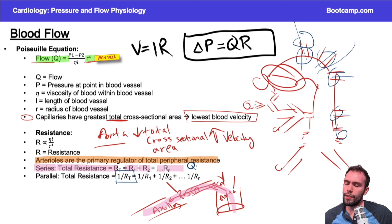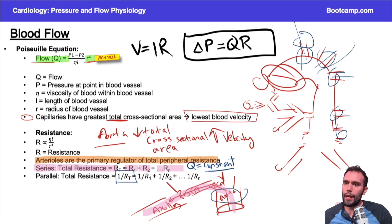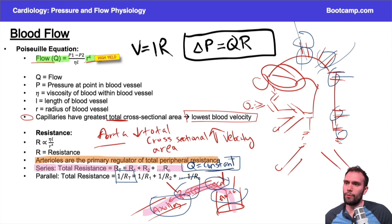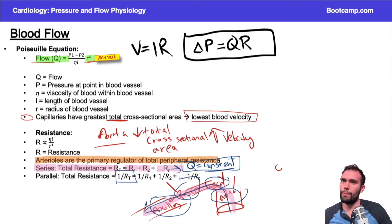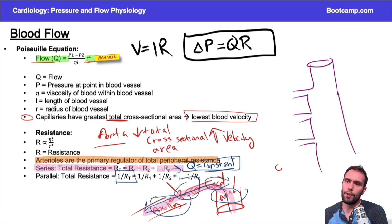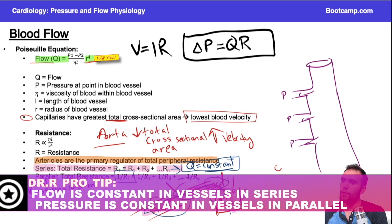The key point for series: blood flow is constant through each resistor. Flow through the arteries, arterioles, and capillaries is constant in series. For example, flow through the aorta, brachiocephalic, subclavian, and axillary arteries is all constant — the blood doesn't change its flow rate moving from one vessel to the next; it just flows based on pressure gradient and resistance. For vessels in parallel, all vessels branching from a single vessel will have the same pressure.